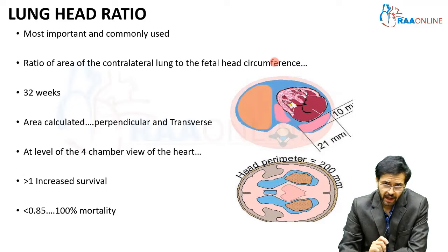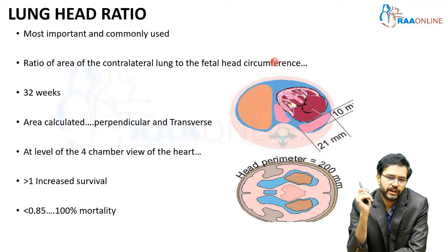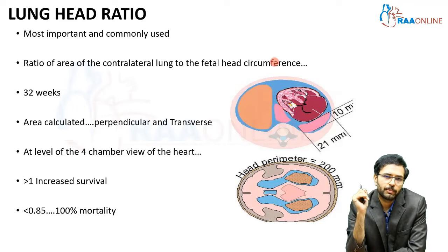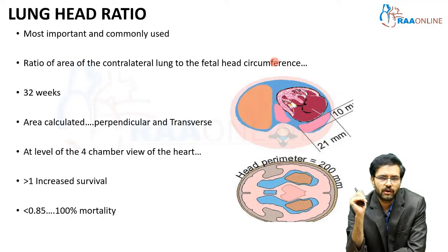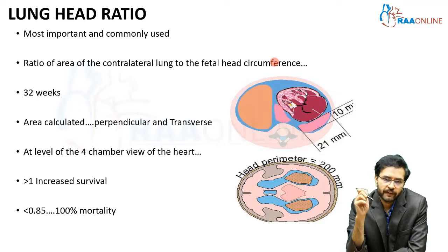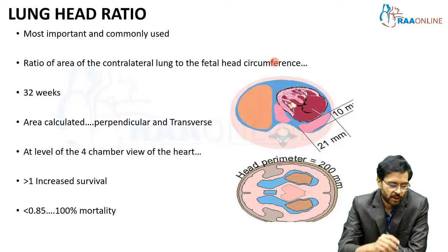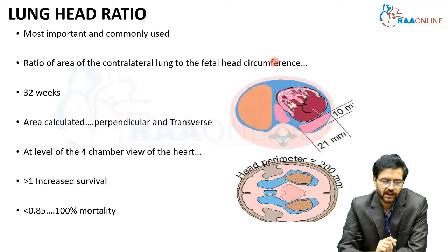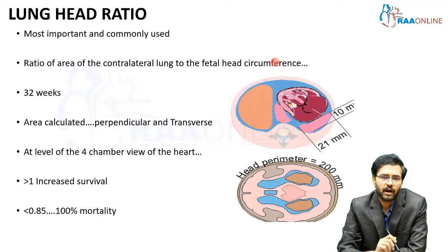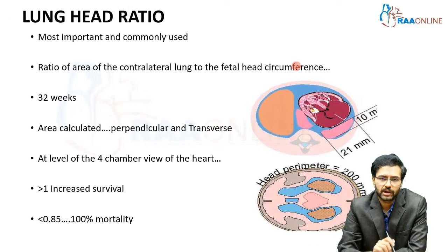If the lung head ratio is more than one, it indicates increased chances of survival and a good prognosis. If the value is less than 0.85, there is said to be 100% mortality.